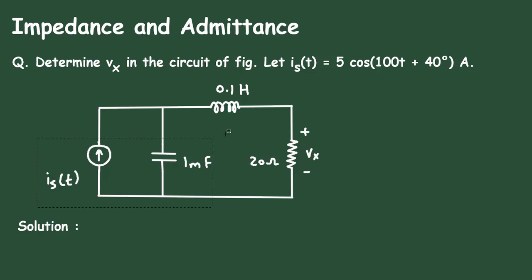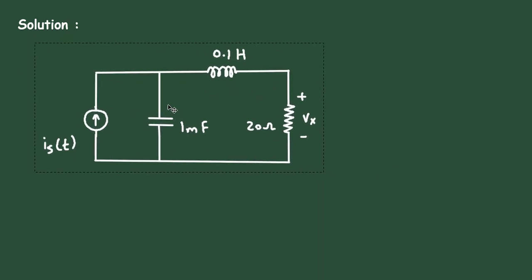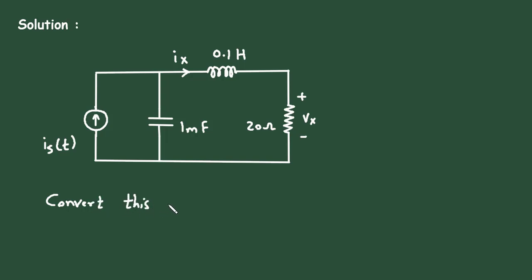First of all we will copy the given circuit. Now here we will find this current — let us call it current Ix. To find this current Ix we will use the current division rule. But before that, these values are given in time domain format, so we will convert them into phasor domain.